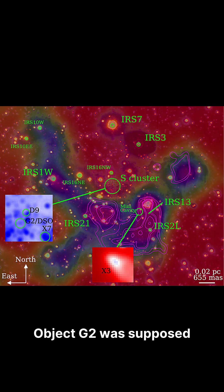Object G2 was supposed to be torn apart in 2014, but new data from the ARIS telescope shows it's still there, following a perfectly stable orbit.